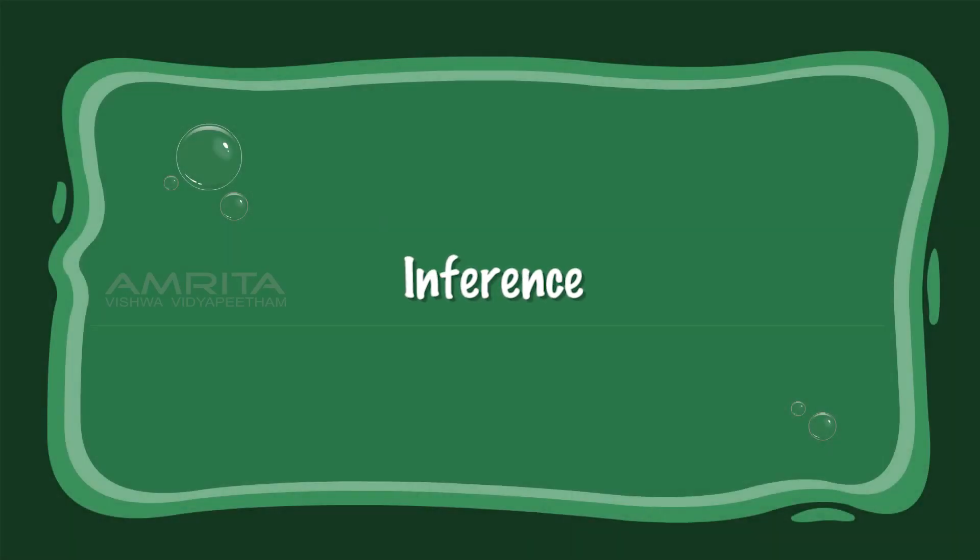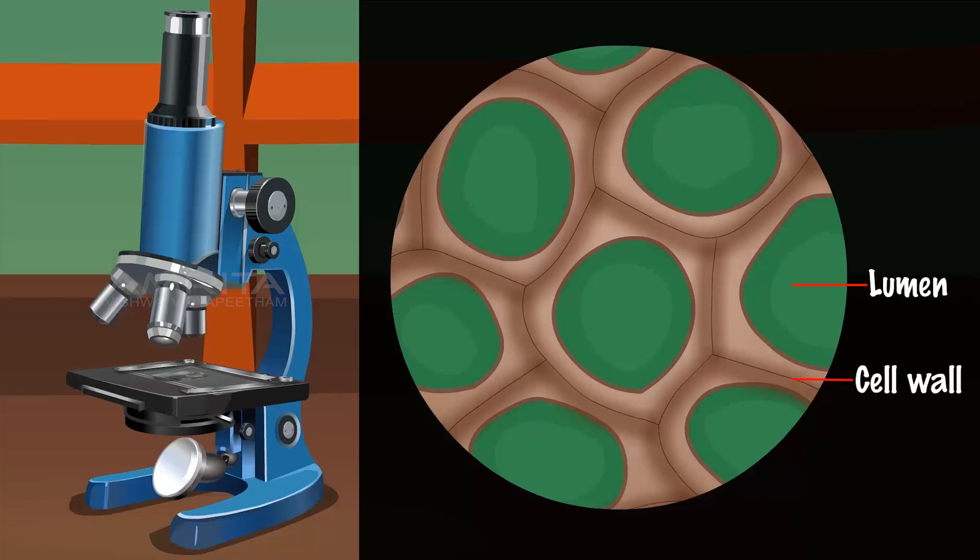Inference: As the cells have thickened cell walls and little protoplasm, we can confirm that the tissue seen on the slide is a sclerenchyma tissue.